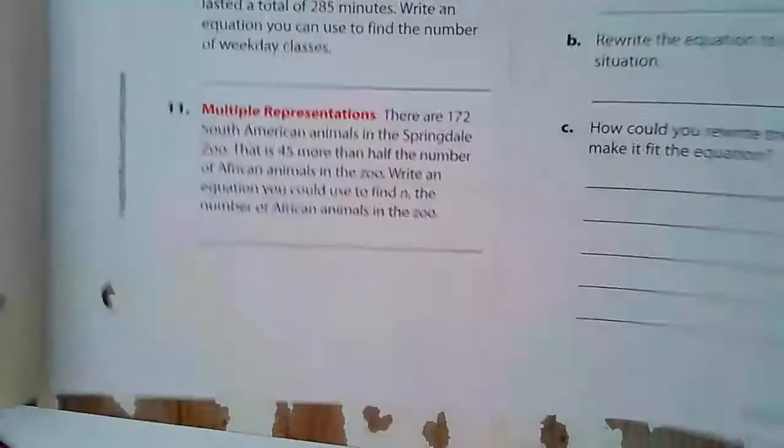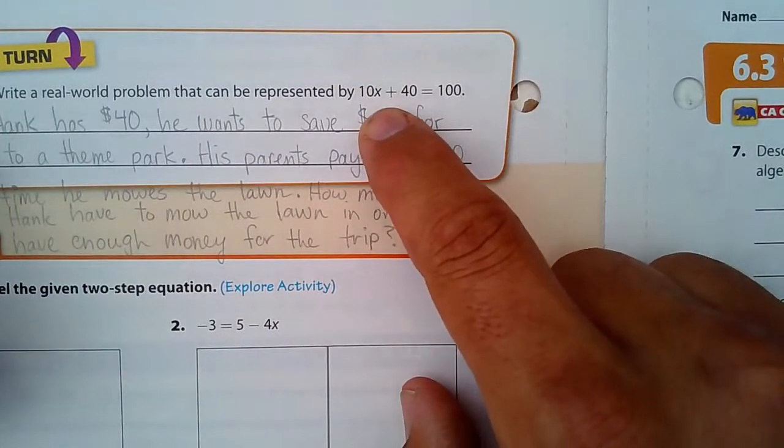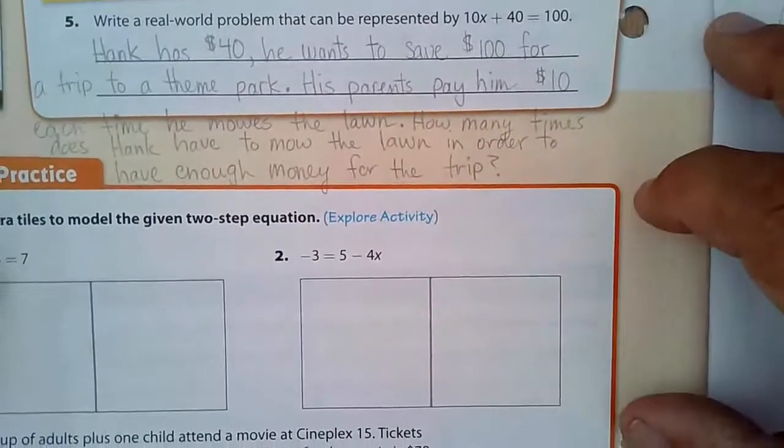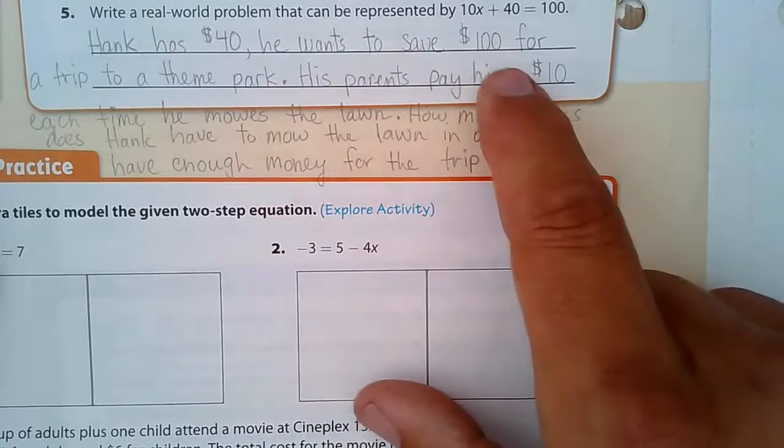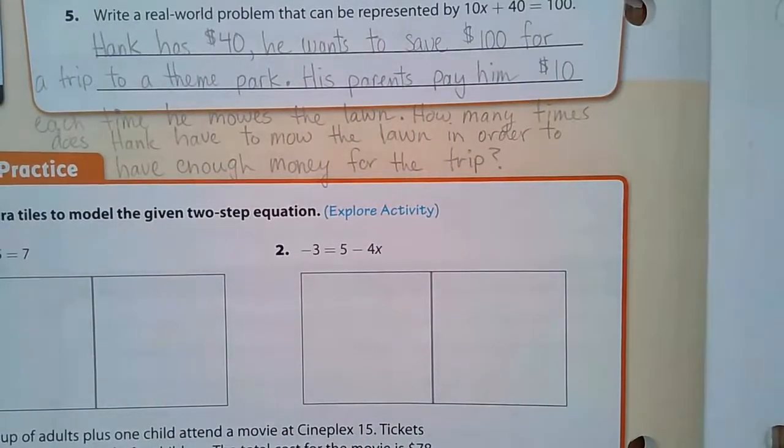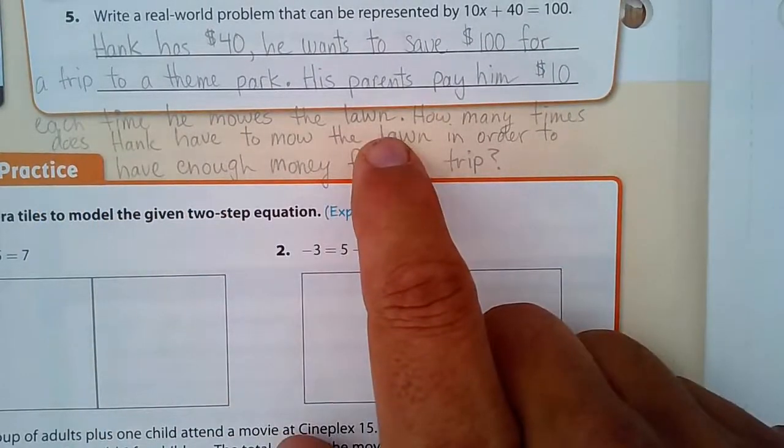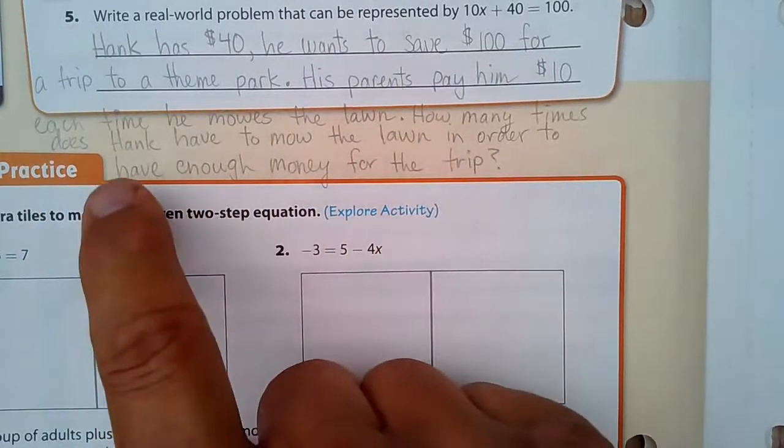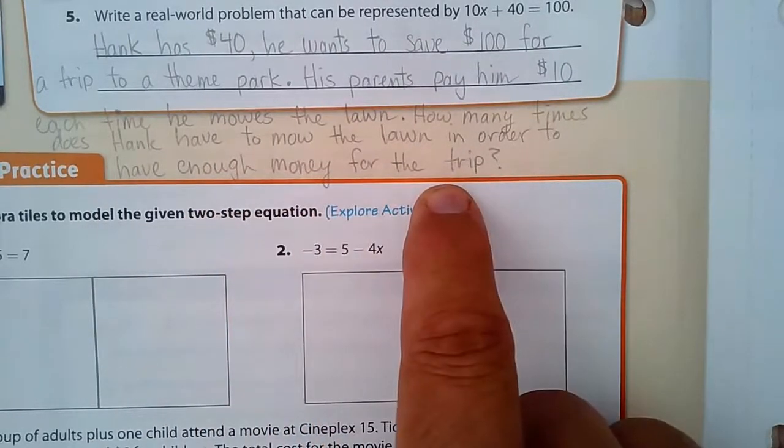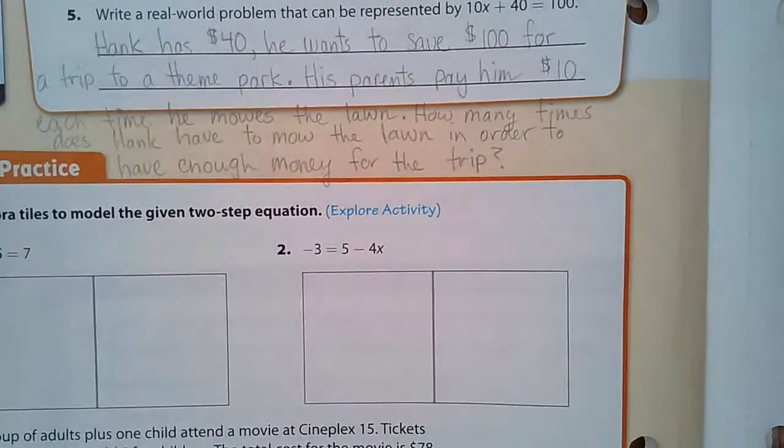Write a real world problem for 10x plus 40 equals 100. Here's my attempt. Hank has $40. He wants to save $100 for a trip to a theme park. His parents pay him $10 each time he mows a lawn. How many times does Hank have to mow the lawn in order to have enough money for the trip? So x will be the number of weeks. That's all you got to know.